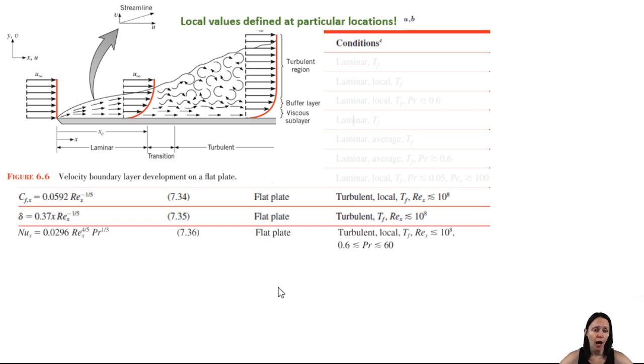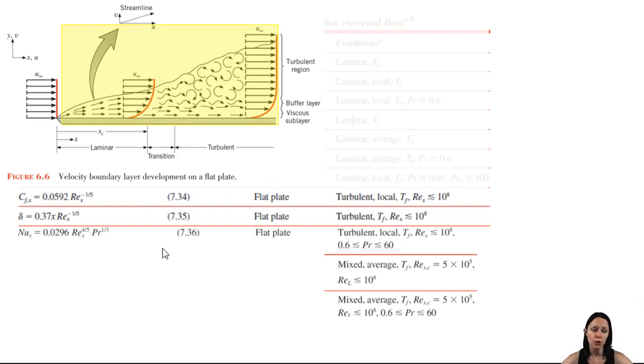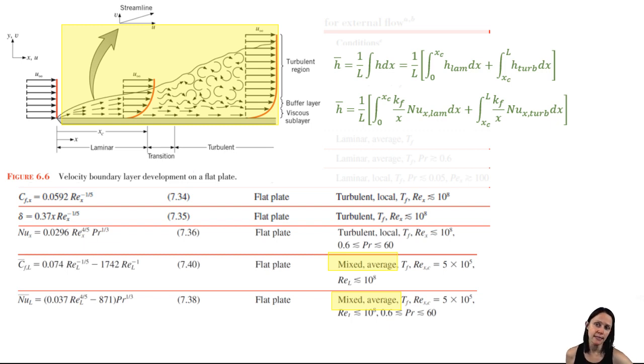But we need to be really careful about when we're talking about average values. So if you're going to be talking about the average values, you need to keep in mind that there's going to be a region of laminar flow before that turbulent region. In other words, you're going to have mixed flow. So you need to integrate over the laminar and turbulent regions to get the equation for the average heat transfer coefficient over the entire plate. You have equations for the local Nusselt number for laminar and turbulent flow. And if you integrate those laminar and turbulent regions and then relate the average Nusselt number to the average heat transfer coefficient, you get the equation for the average Nusselt number for mixed flow. And you can apply a similar strategy to get the average friction coefficient for mixed flow over a flat plate.